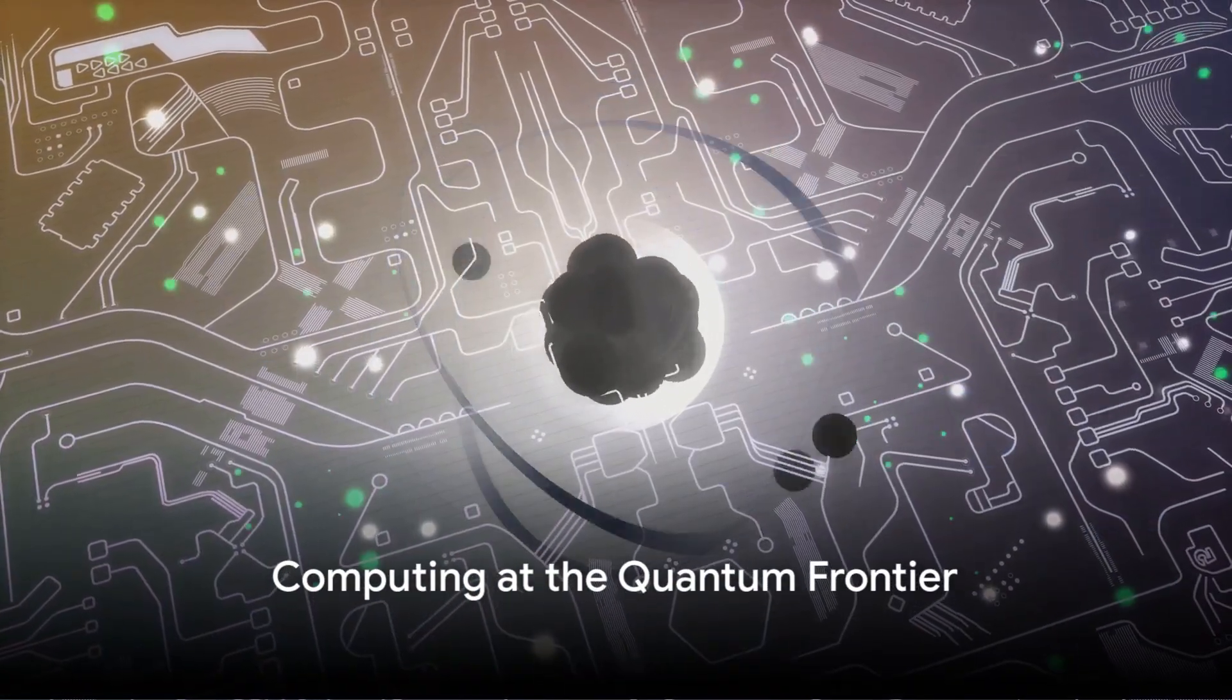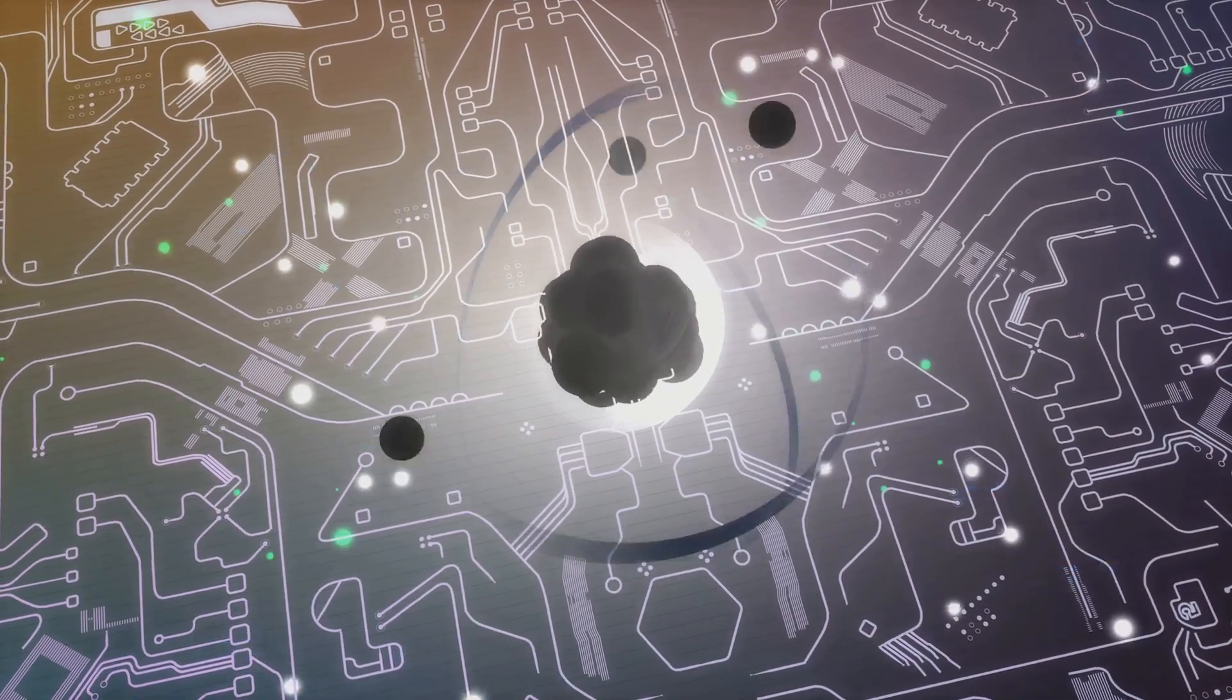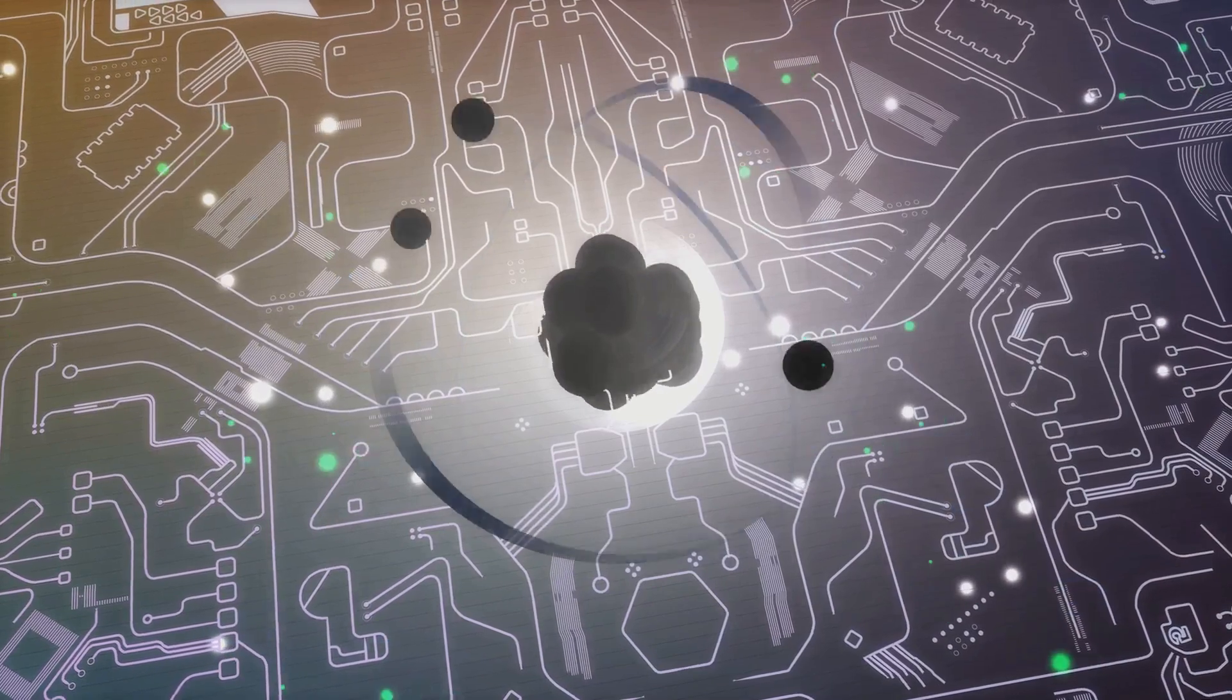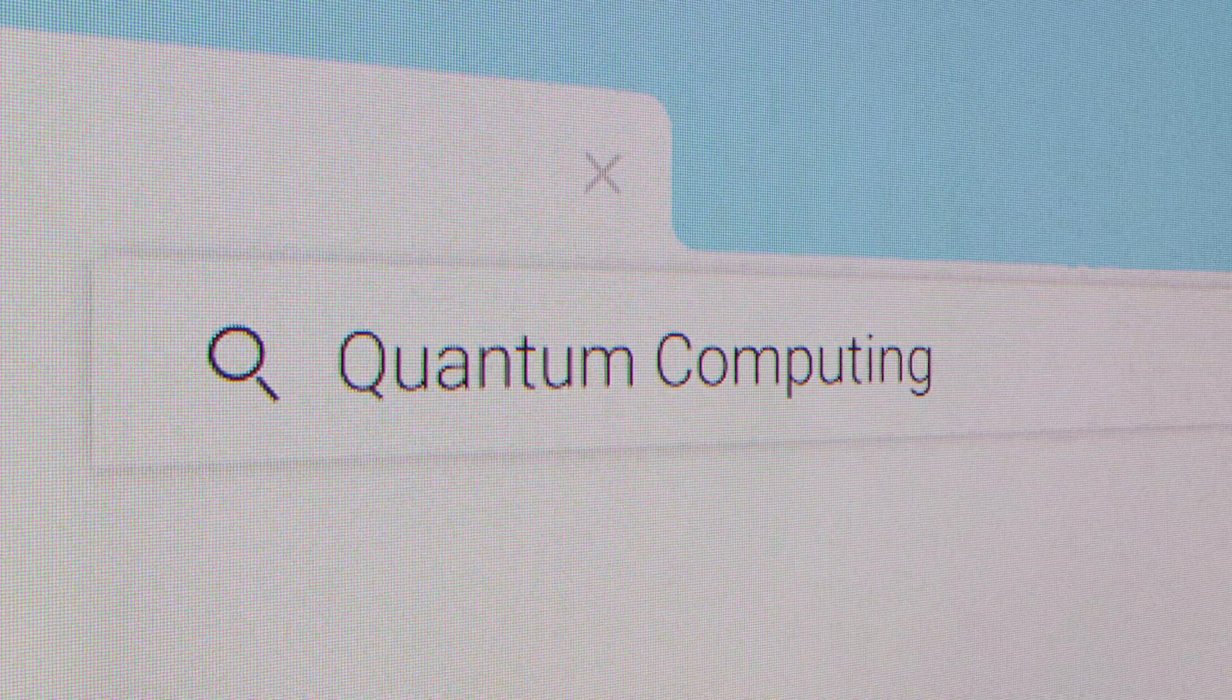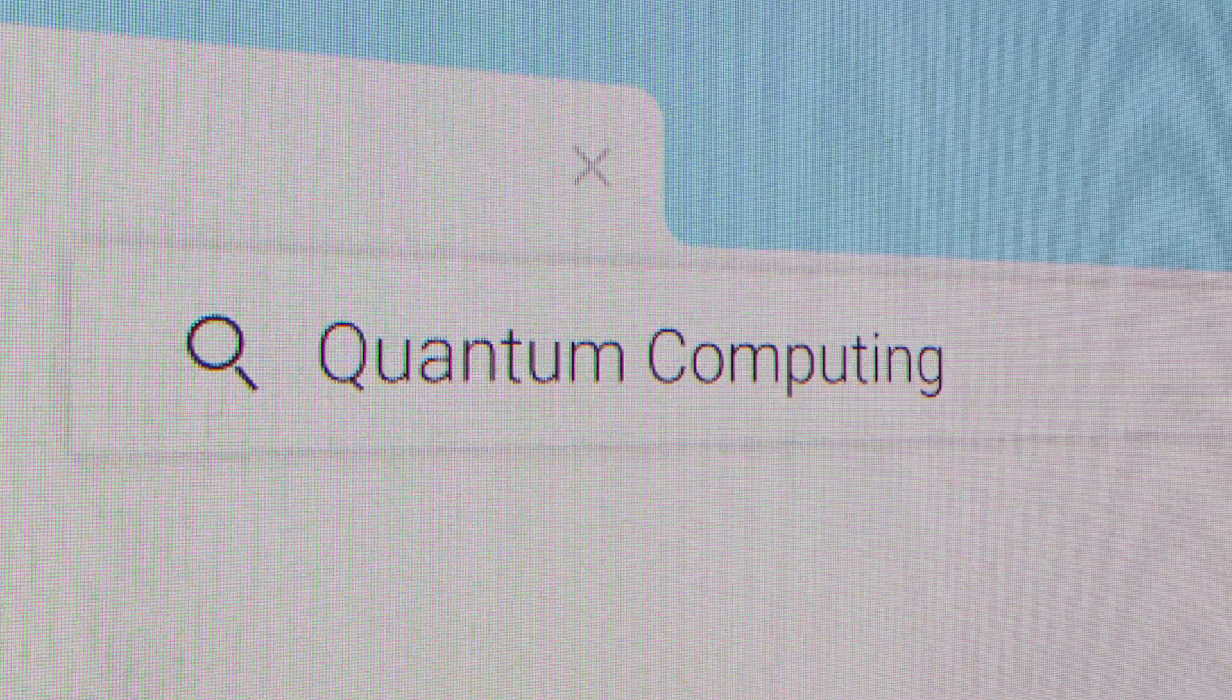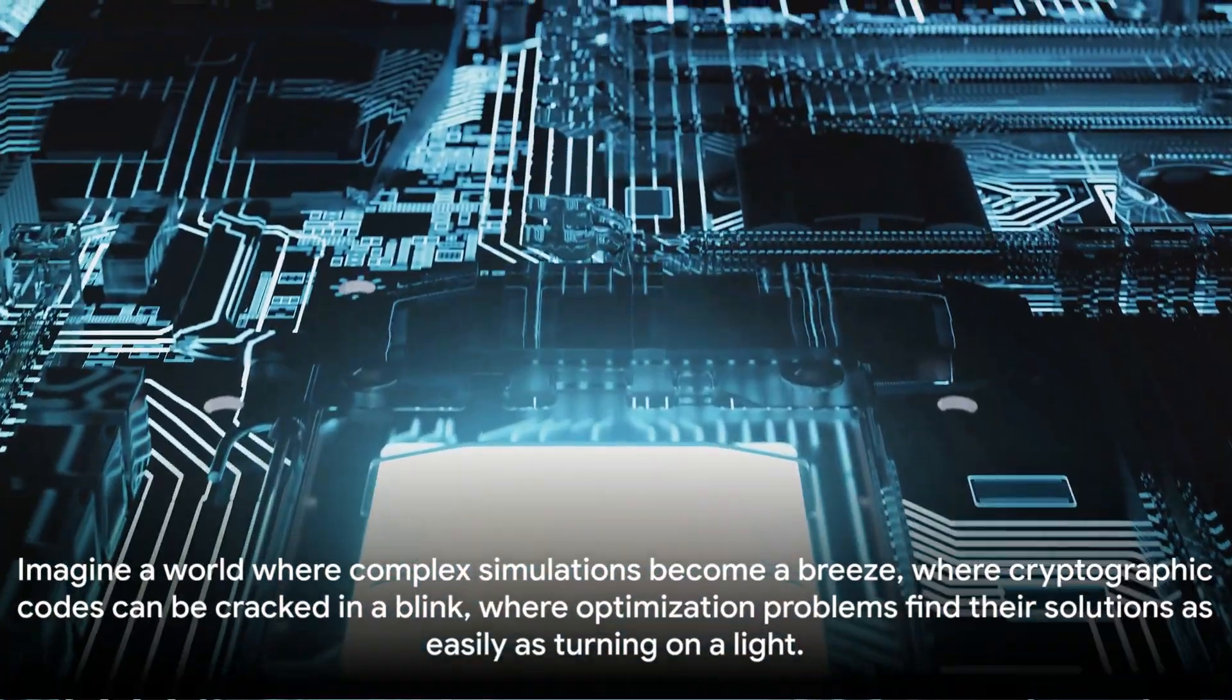What if computers could solve problems in seconds that would take conventional computers thousands of years? Welcome to the world of quantum supremacy, where quantum computers, with their ability to process multiple possibilities simultaneously, outperform classical computers. It's like comparing a sprinter to a snail, or a rocket to a bicycle. But what does this mean for us?